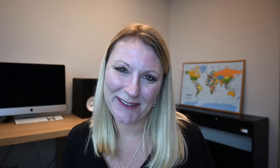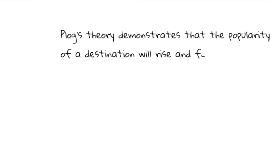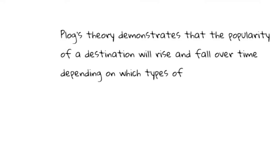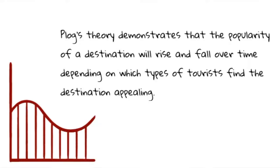To put it simply, Plog's theory demonstrates that the popularity of a destination will rise and fall over time depending on which types of tourists visit the destination.